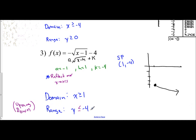To describe this translation: it reflects over the x-axis because a is negative 1. H is 1, so the graph shifted right one unit. The k value is negative 4, so it shifted down 4 units. Identifying h and k gives us our domain and range, our starting point, and describes our translation and transformation.